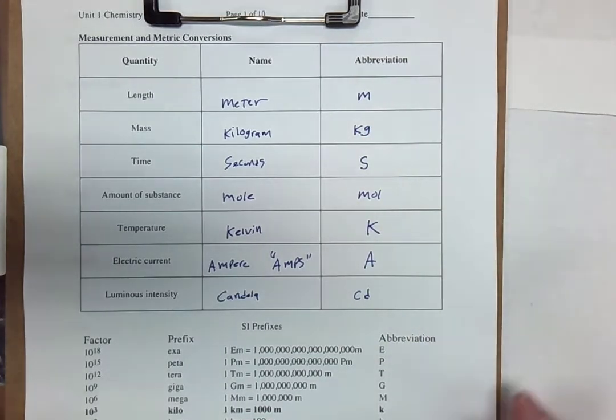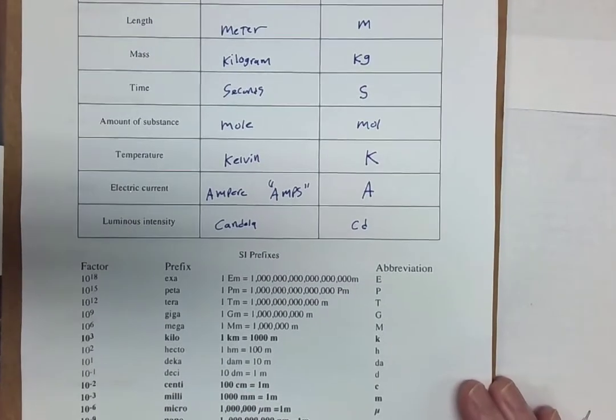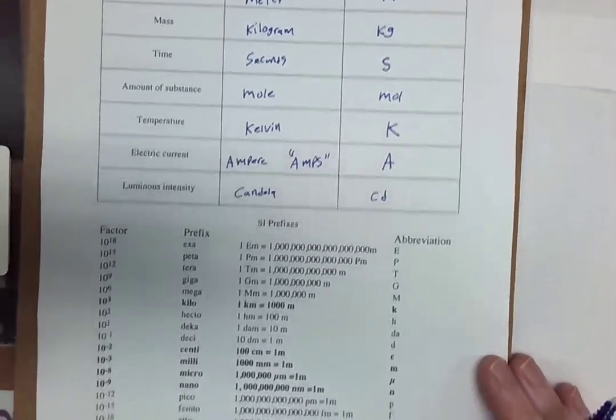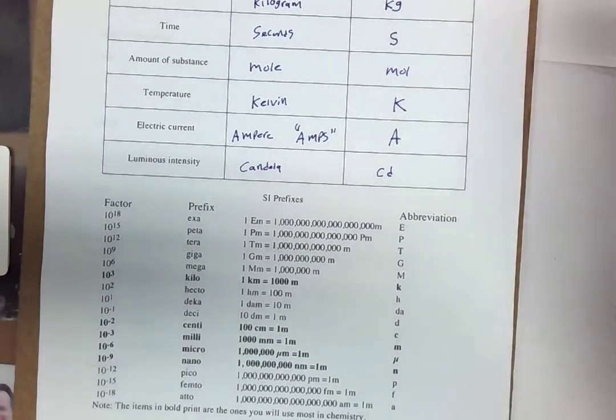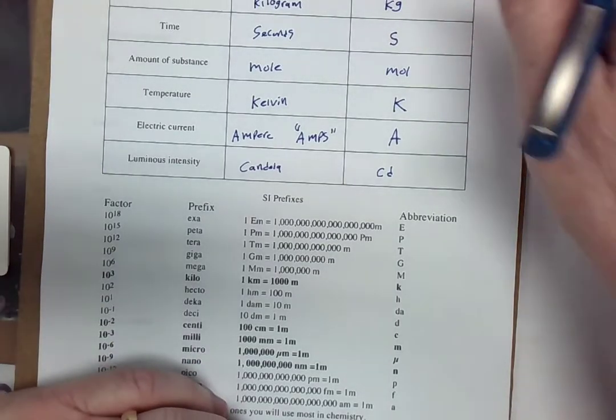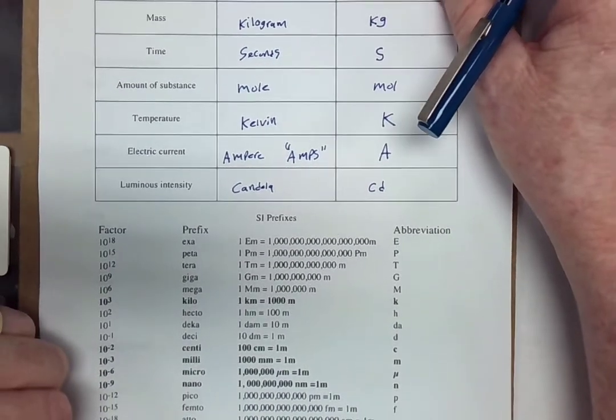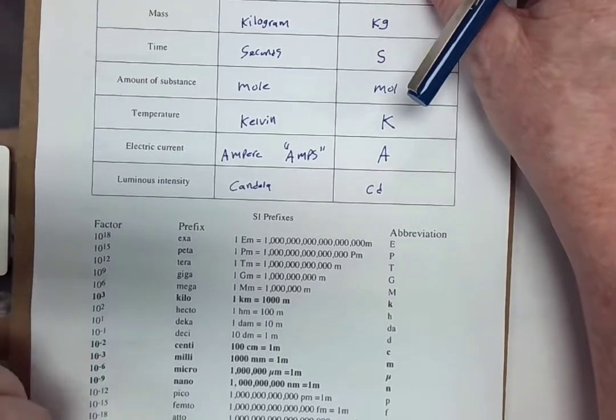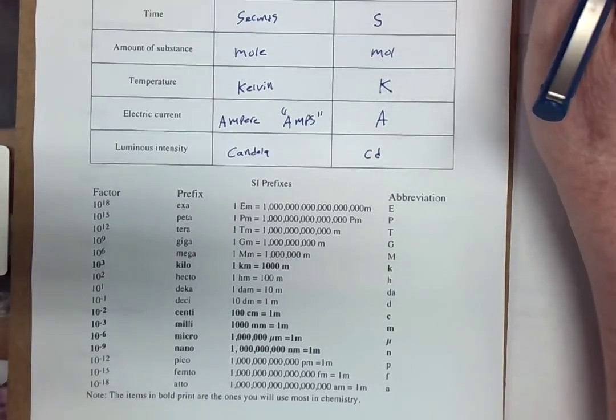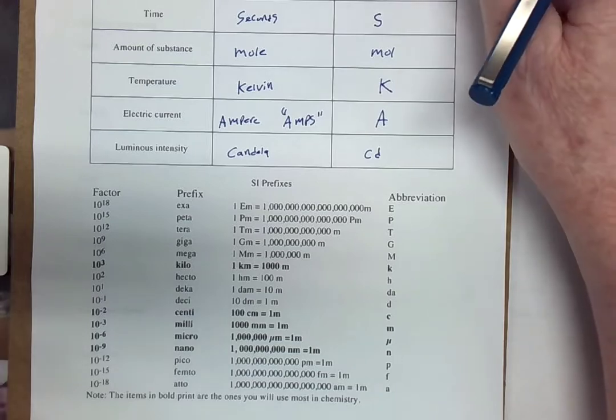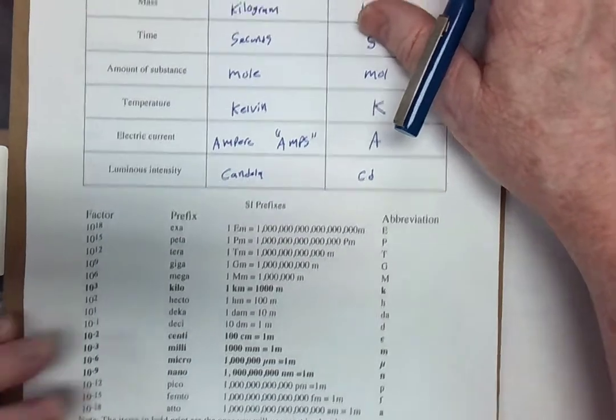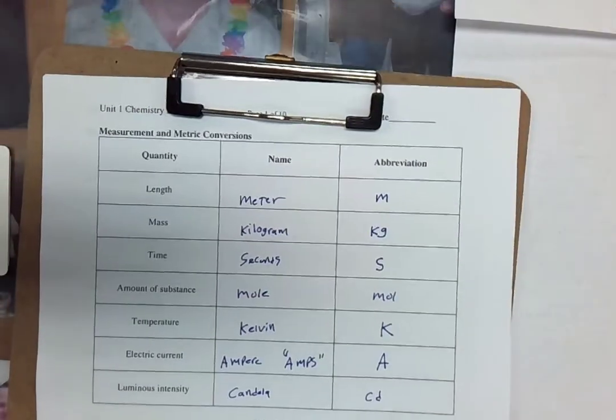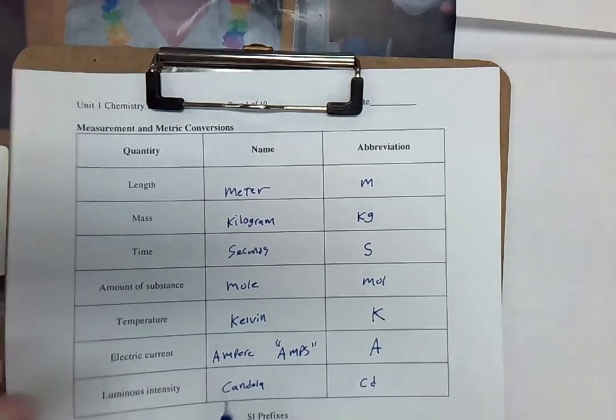Now, also here on page 1 of this outline, you will see a list of metric prefixes and their values. You are probably pretty familiar with these already, so I don't think I need to talk about them so much. But just in case you needed a good reference, a place to find them, they're right here on the front page. Okay, so let's move on to page number two.